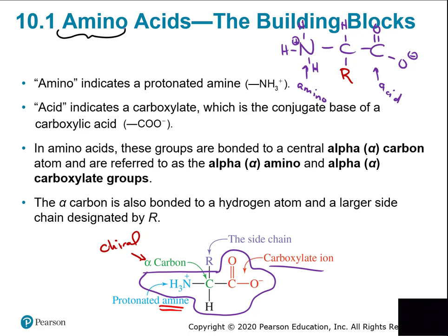The word 'amino' comes from amines and amides — the functional groups with nitrogen, which no other group has. Every amino acid has a nitrogen on one end (the amine part) and a carbon with two oxygens on the other end (like a carboxylic acid). That's where the name 'amino acid' comes from — amino for the nitrogen side, acid for the carboxylic acid side.